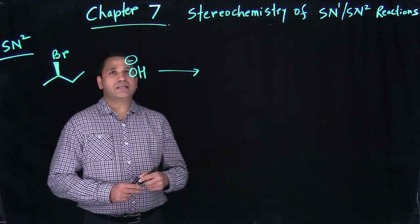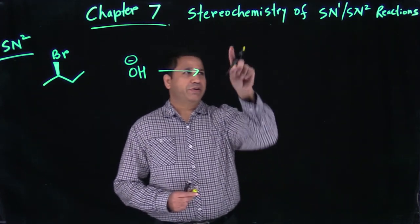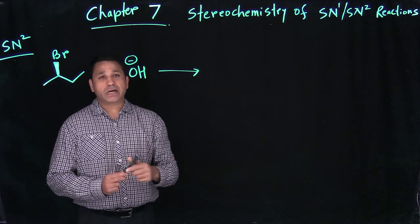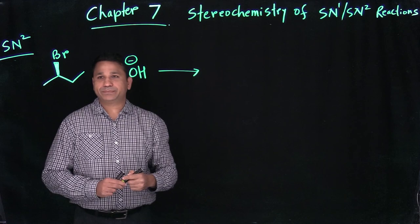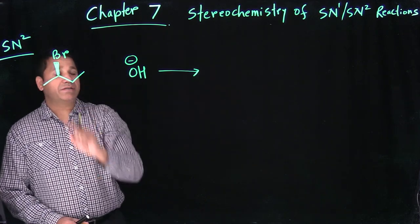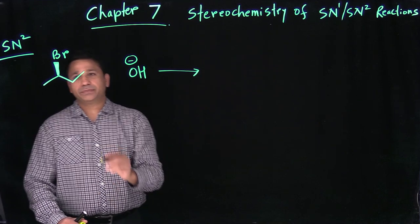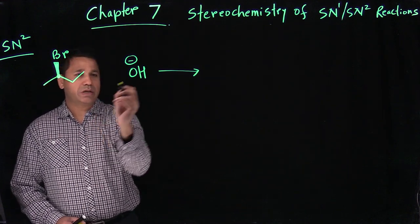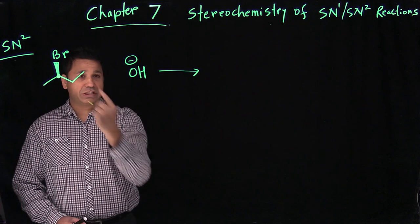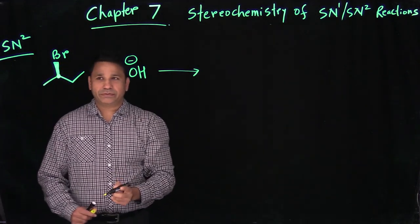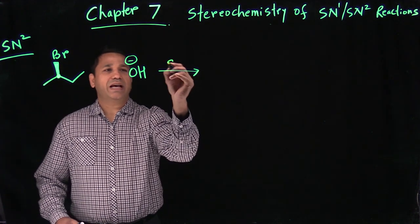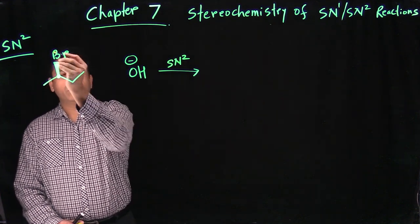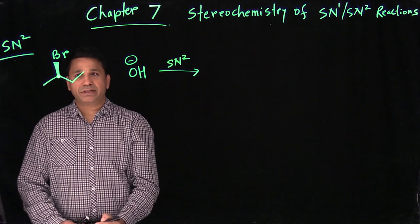Today we continue with chapter 7, which is stereochemistry of SN1 and SN2 reactions. This is the last part of the chapter. For SN2 reaction, when you have a stereogenic carbon — that's your alkyl halide carbon with the leaving group — and you have a nucleophile with conditions for substitution: secondary carbon and strong nucleophile means SN2. In SN2, the nucleophile attacks and the leaving group leaves simultaneously. It's a one-step mechanism.